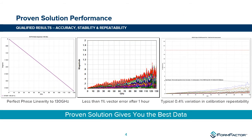Like all FormFactor solutions integrated with instrumentation, we always provide proven solution performance. We characterize the performance of every system we create — as seen in the data shown here, looking at phase linearity all the way to 130 gigahertz, which proves the accuracy of the system. We also examine drift and stability: the system shows less than 1% vector error after one hour, meaning you get good accurate measurements. In terms of calibration repeatability, repeating 20 calibrations gives 0.4% variation — ensuring these proven solutions deliver the best possible data.